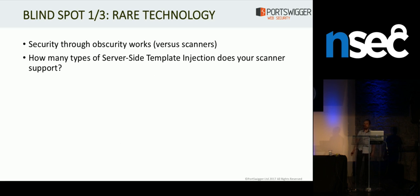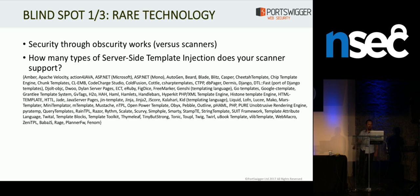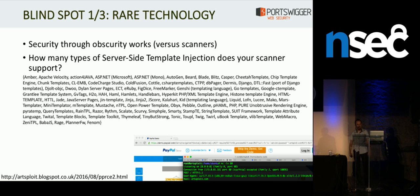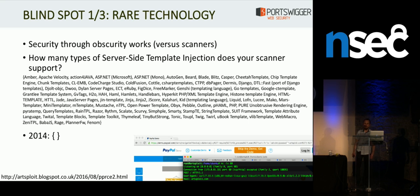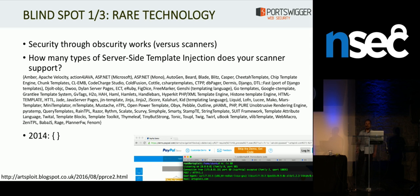The first blind spot is that scanners are really bad at dealing with security through obscurity. For example, how many types of server-side template injection does your scanner support? Probably not all of those, and that's just a list of the most popular ones from Wikipedia. ArtSploit recently got code execution on PayPal using Dust.js, which is a template engine not popular enough to be in that list. And of course, in 2014, no scanners detected any kind of server-side template injection. Vulnerable stuff was being scanned — I know that for a fact — but the scanners just weren't finding it. So any use of a slightly obscure technology can just break vulnerability scanners' effectiveness on your site, and that can happen in quite unexpected ways too.